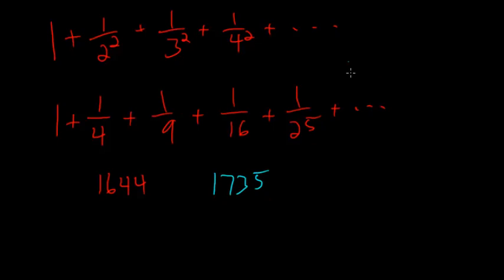And it was Euler in 1735 who finally finds the solution to this. And this is equal to this entire series. This infinite long sum adds up to pi squared divided by 6.